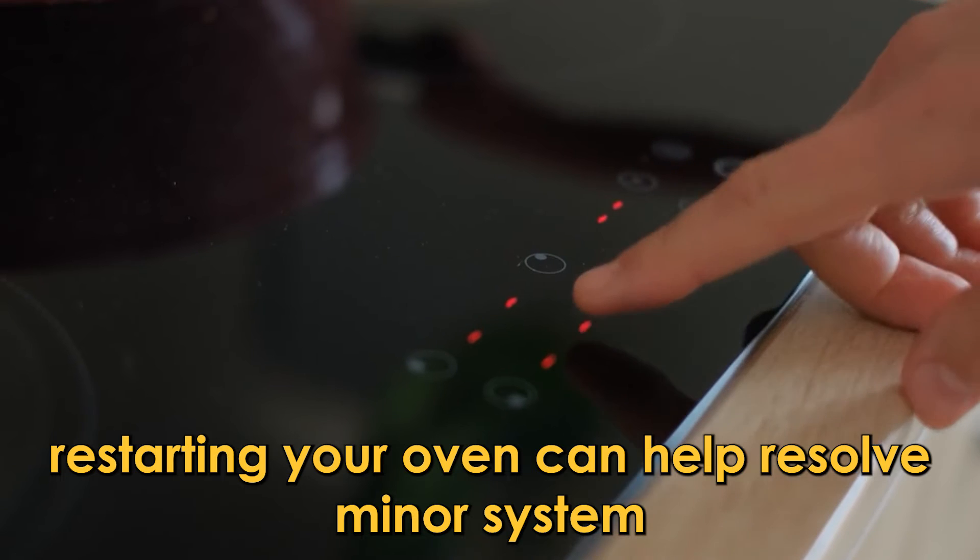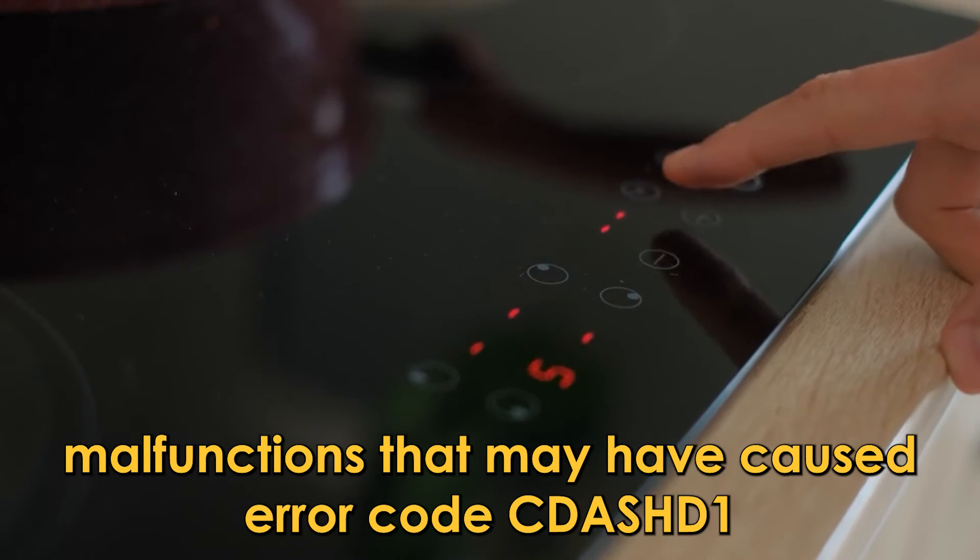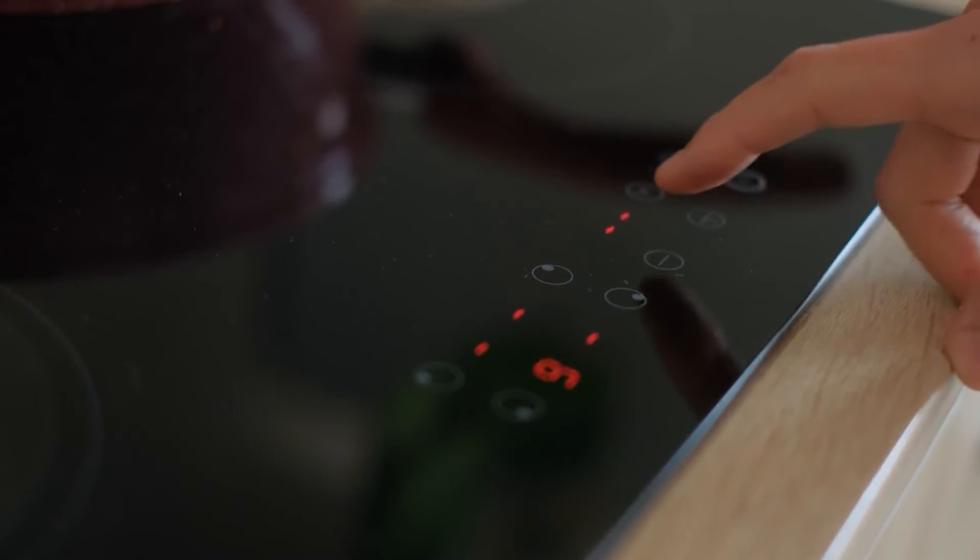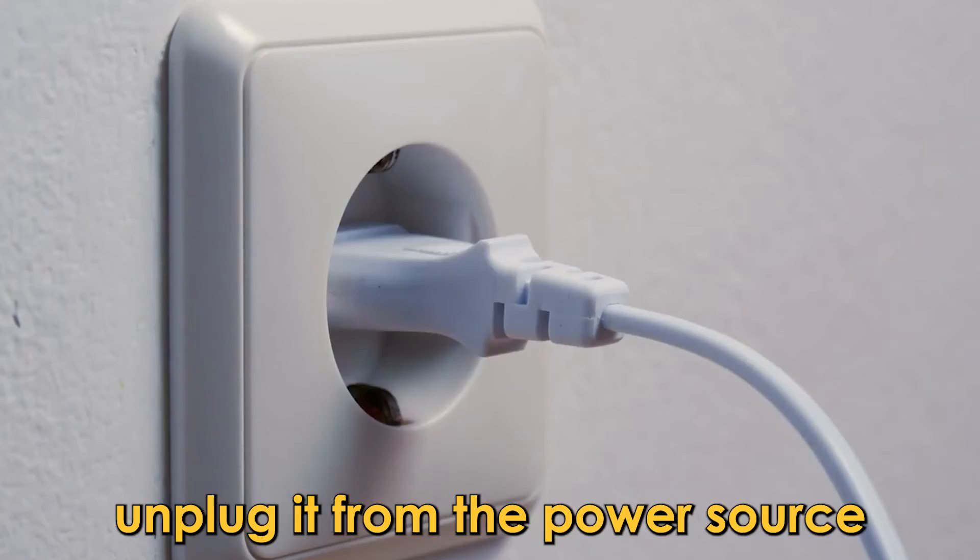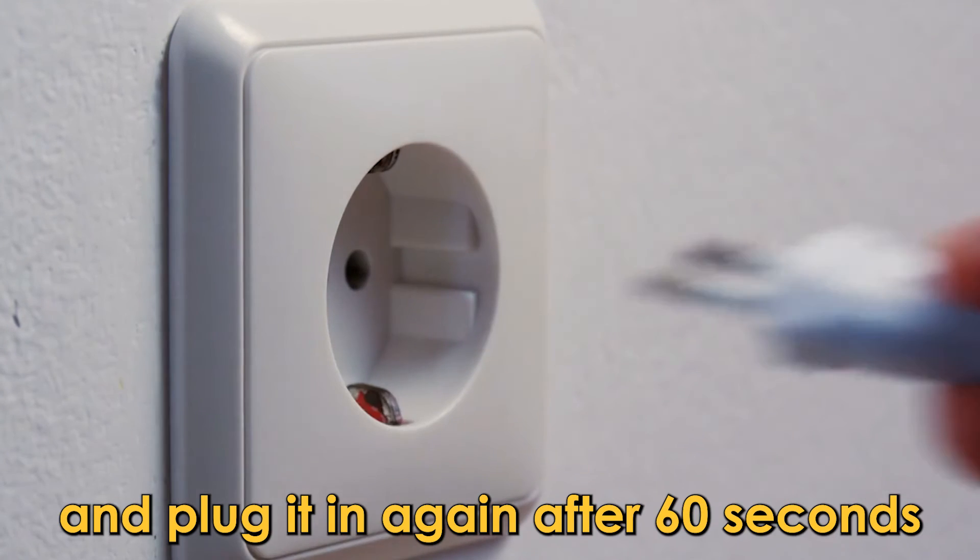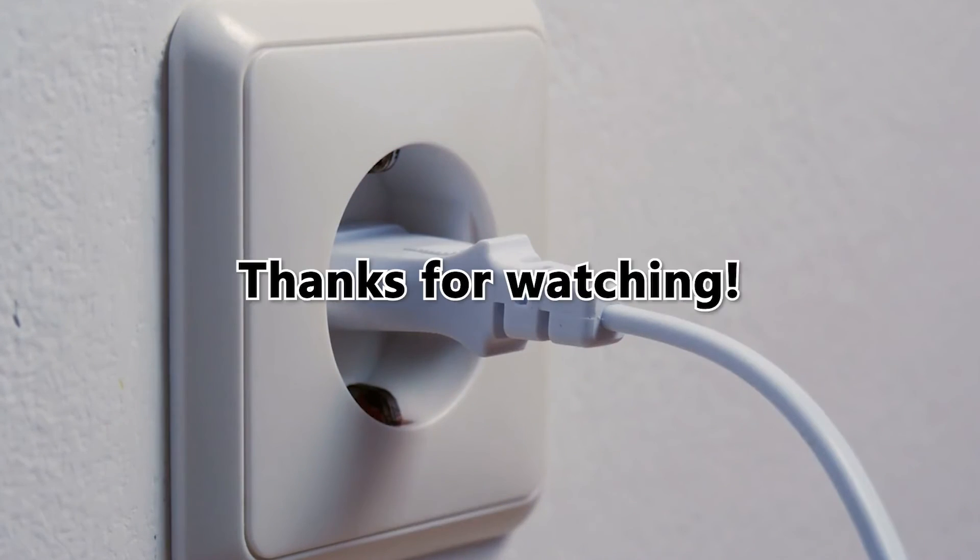Now, restart the oven. Restarting your oven can help resolve minor system malfunctions that may have caused error code C-D1. Turn the oven off for 10 seconds and then turn it back on. If the error persists, unplug it from the power source and plug it in again after 60 seconds. Thanks for watching.